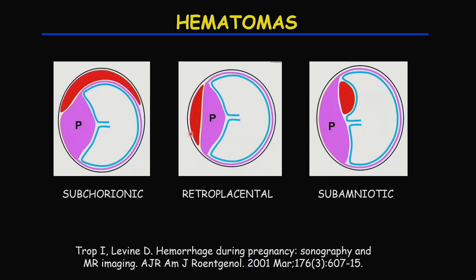The most common one we're familiar with is the subchorionic hematoma, often due to venous bleeding. If it's large it's of concern, but small ones will often resolve on their own. Retroplacental hematomas are of great concern — these are often due to arterial bleeding and are the abruptions we're very worried about. Rarely, we can get a sub-amniotic hematoma, just underneath the amnion, which can look bizarre and almost like a placental mass protruding into the uterine cavity.